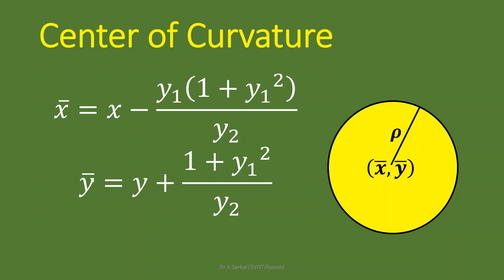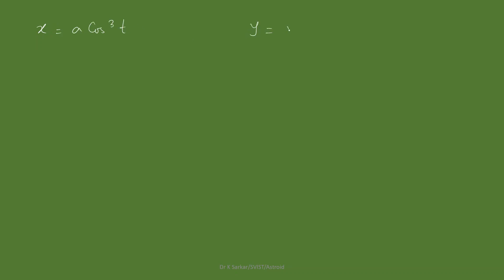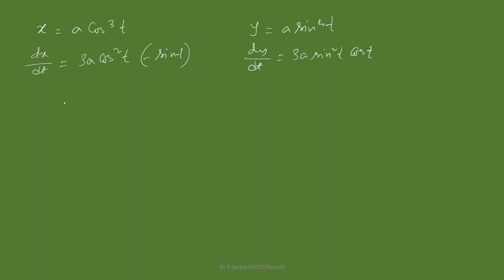To find the evolute we must find the center of curvature, and to find the center of curvature we need y₁ and y₂. Given x = a·cos³t and y = a·sin³t, we compute dx/dt = 3a·cos²t·(-sin t) and dy/dt = 3a·sin²t·cos t. Then y₁ = dy/dx = (dy/dt)·(dt/dx).